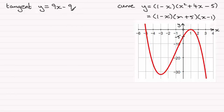This tangent, this line, would intersect the y-axis when x is 0. That will give us minus 9. So that would be a point down here, minus 9. And remember it would have a gradient of 9.